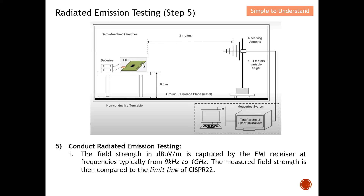For the detailed final scan, the turntable turns more slowly and the antenna height is varied finely — for example, from 1.00 meters to 1.01 meters, 1.02 meters — to find the antenna height that produces the maximum radiated emission from the EUT. The turntable also rotates to find the facing direction with the maximum value. With that maximum value, all readings are tested by the EMI receiver to determine pass or fail. If the reading is lower than the limit line, the test is concluded as passed.